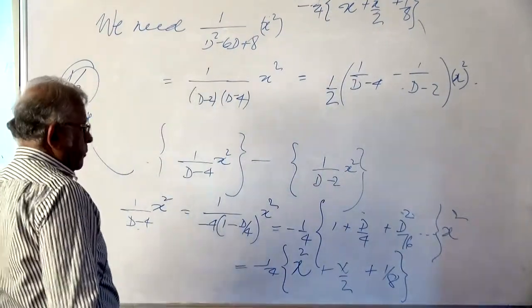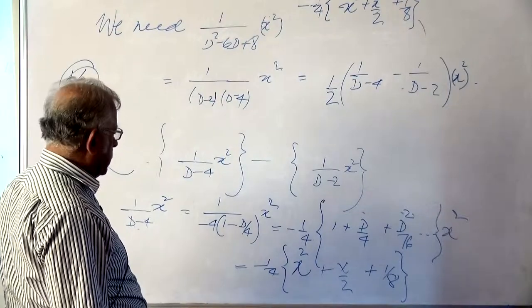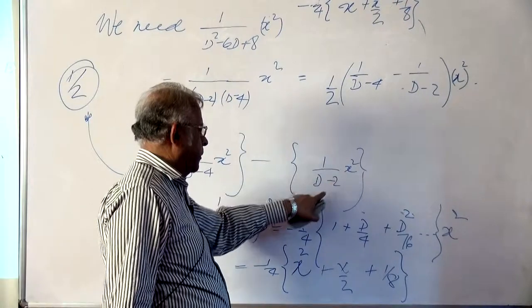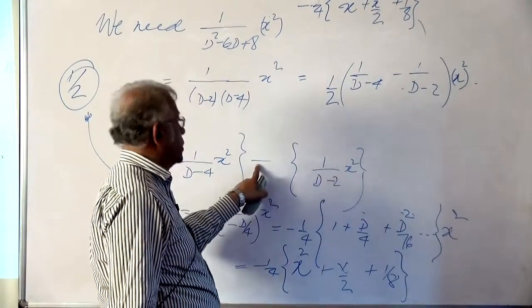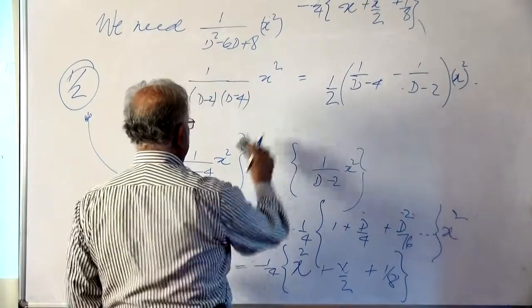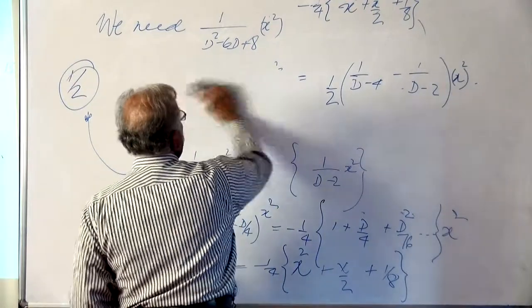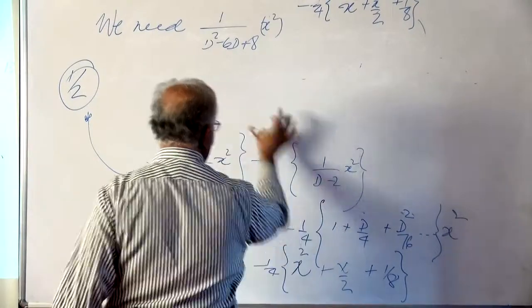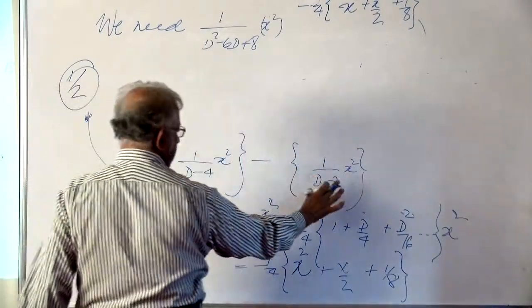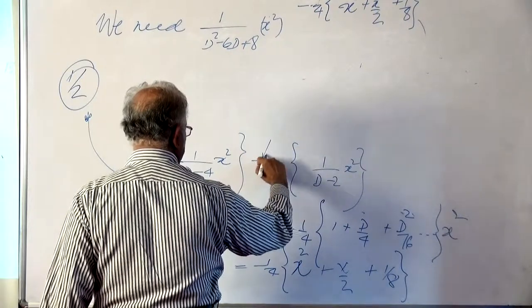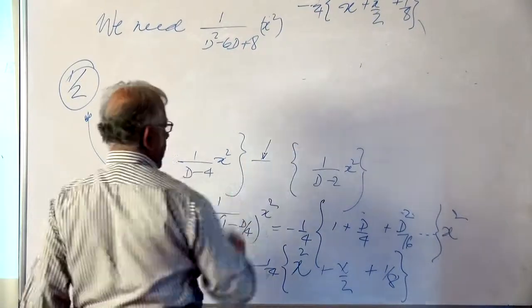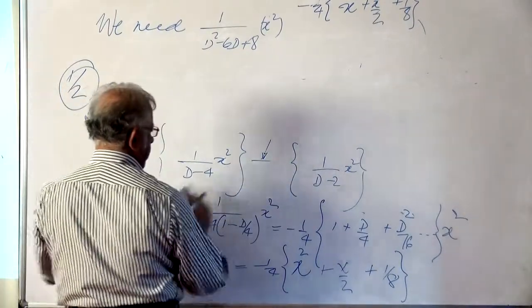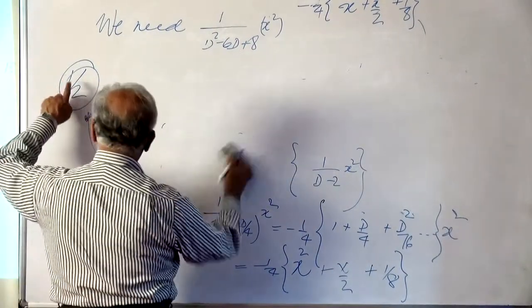Next we do the same kind of operation on 1/(d-2) on x², and that has to be subtracted from here. Whatever is the result of this we will subtract from that captured fellow. And we must not forget the half.